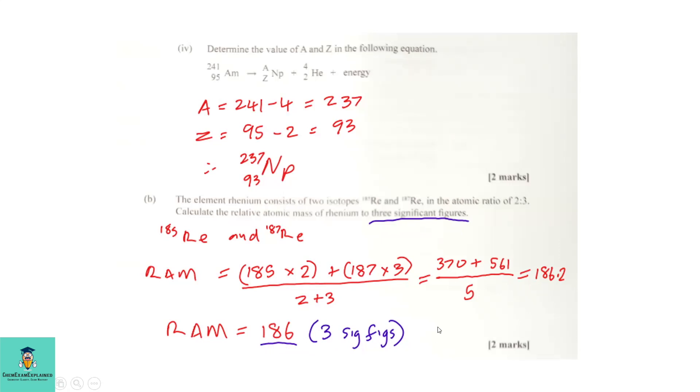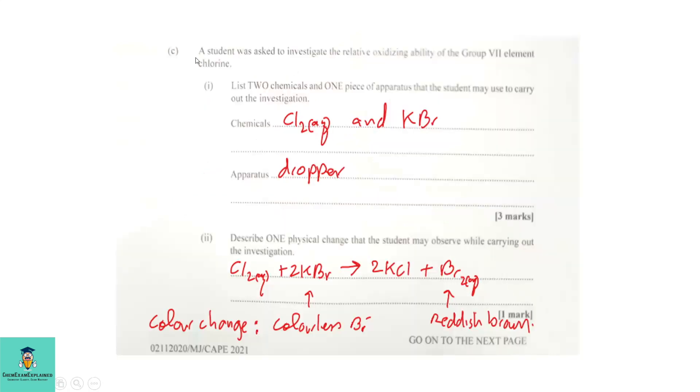Let's continue. Part C. A student was asked to investigate the relative oxidizing ability of the group's seven elements, chlorine. See part one. List two chemicals and one piece of apparatus that the student may use to carry out the investigation.